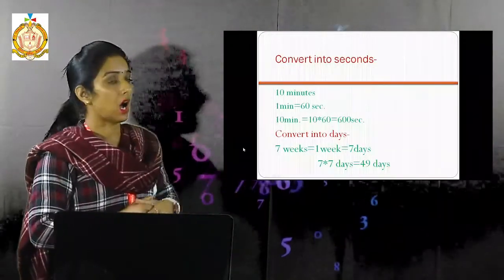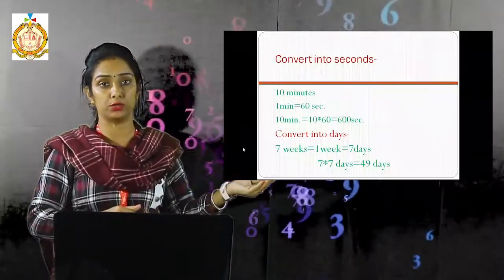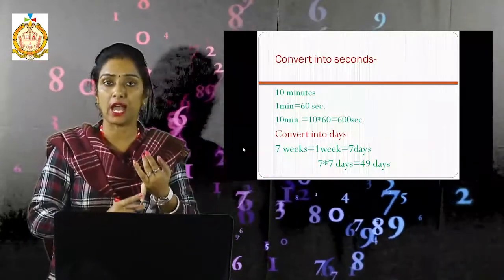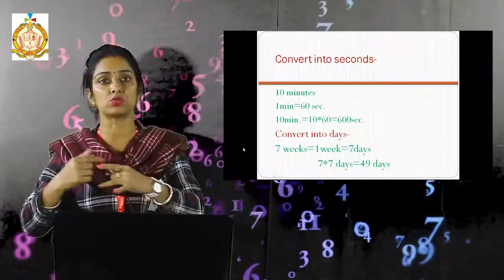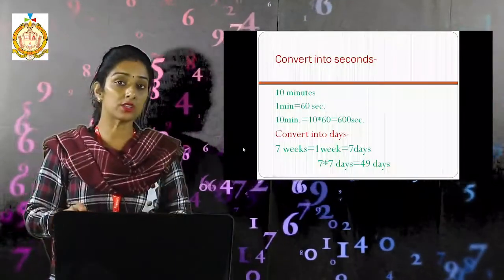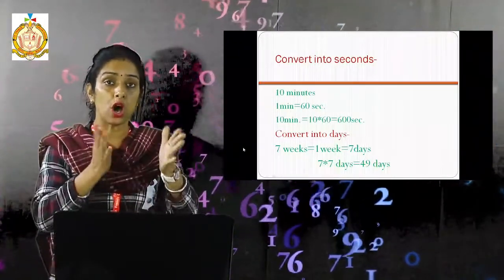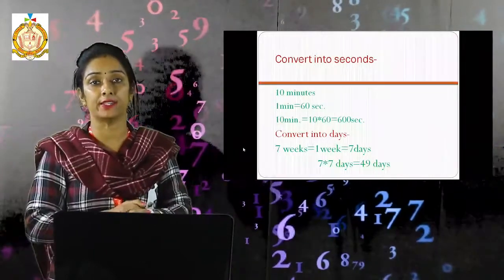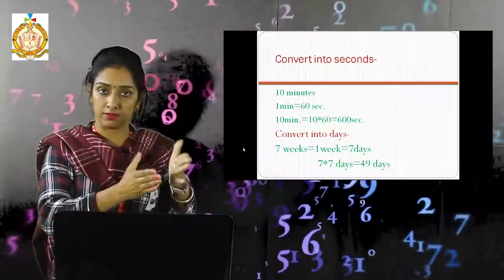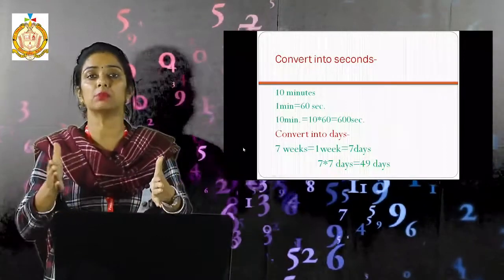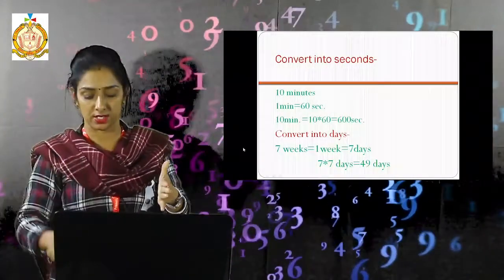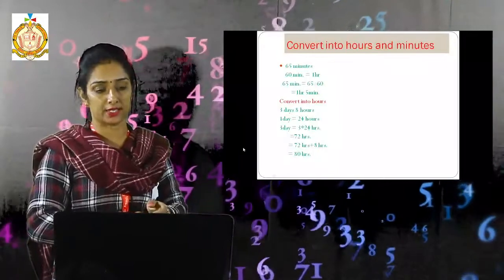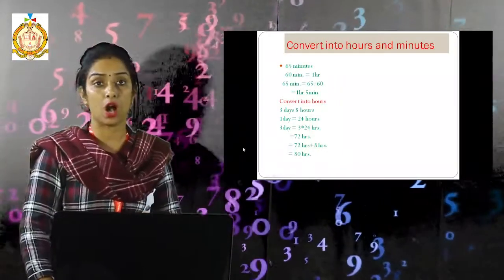Next, convert into days: 7 weeks. We know that 1 week equals 7 days. So 7 weeks equals 7 multiplied by 7 days, which equals 49 days.